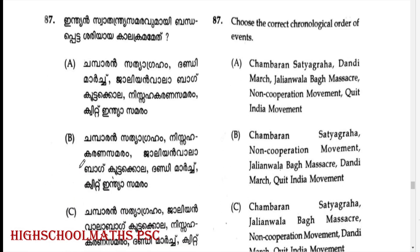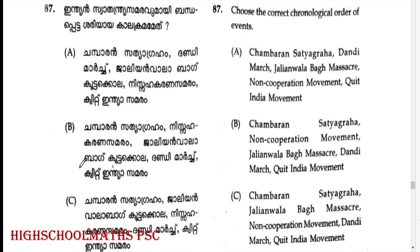Choose the correct chronological order of events related to Indian history. Answer: Option C is the correct chronological order.